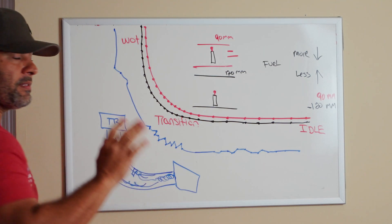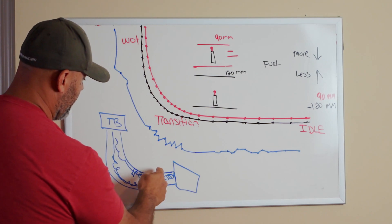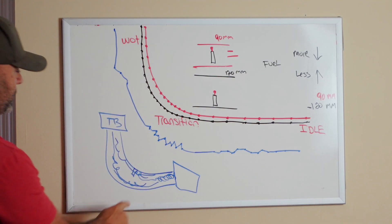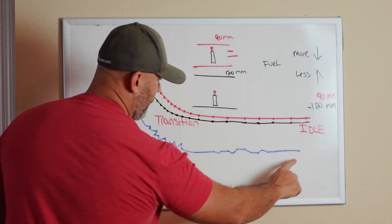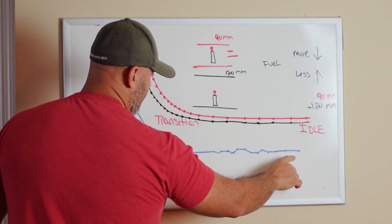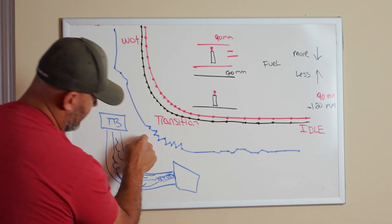Typically we tell you we want to make sure that your mass airflow sensor is in a straight part of the pipe, not too close to the filter, not too close to the throttle body. Well, what happens when it's turbulent like that?